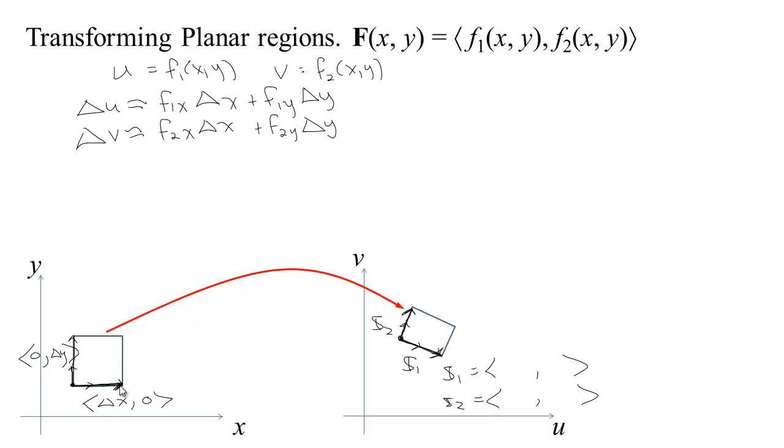Now along this first vector, we're just changing x, we're not changing y at all. And so the change in u, since delta y is 0, is just going to be the partial of f1 with respect to x times delta x. And the change in v, since delta y is 0, is going to be the partial of f2 with respect to x times delta x. So if we look at our vector s1 then, if we make this change in x and no change in y, then over in u, v space, we're going to be moving over about this much and up or down about that much. So there's going to be an f sub 1 of x times delta x, but also an f sub 2 partial with respect to x times delta x. I'll just factor the delta x out here.